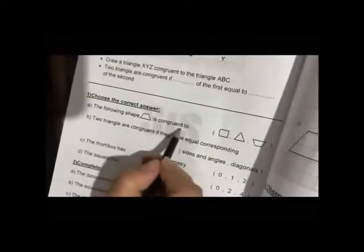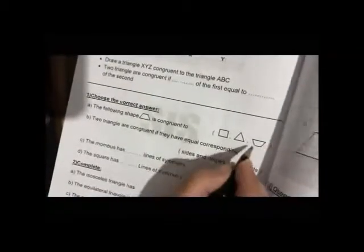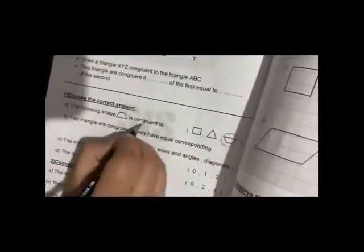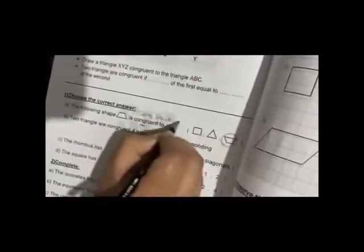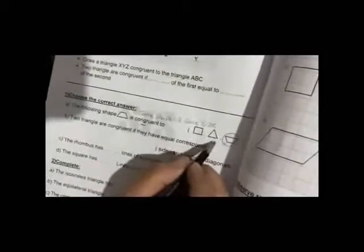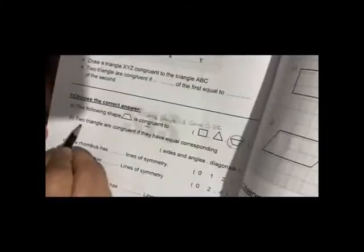Now open page 68. We are on question one. The choice here: the following shape is congruent to which shape? As we said, what is the meaning of congruent? Same shape and same size. So which of these shapes is the same shape and the same size? This one, two.